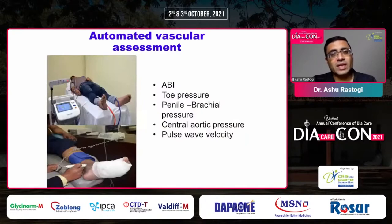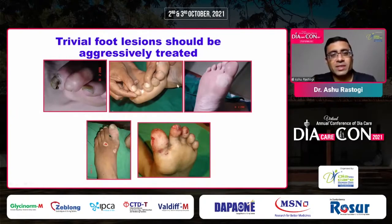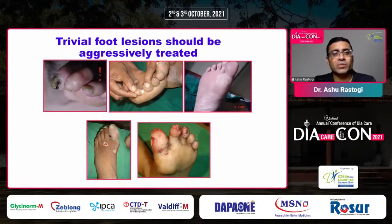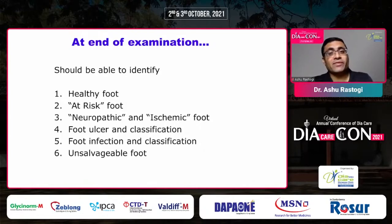If facilities are available, you can perform toe pressures, toe-brachial indices, and levating pressure assessments. Foot problems should be aggressively treated. Common inter-triginous lesions from which foot ulcers arise include bullae, rat bites (which can occur because of neuropathy), swollen or ingrown nails, dermatophytosis, and onychomycosis — all of which need to be treated. These small lesions can lead to bigger wounds and amputation. You should be able to identify a healthy, at-risk, neuropathic, or ischemic foot and classify accordingly.